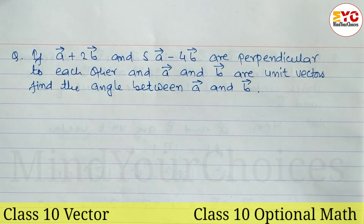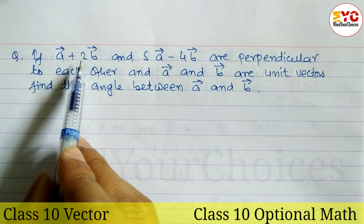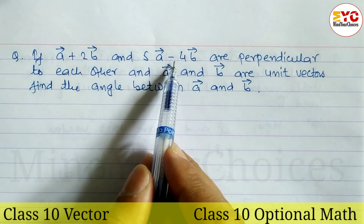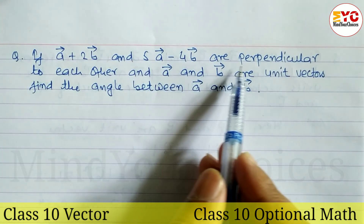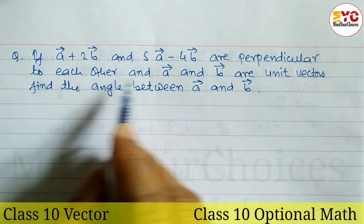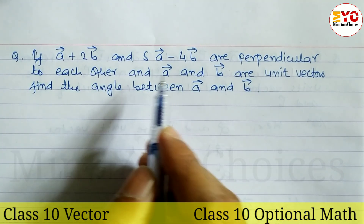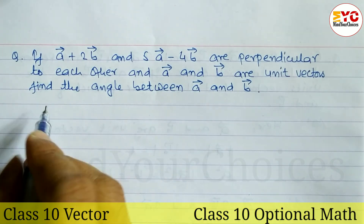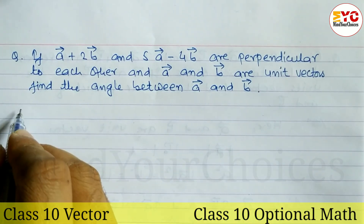In class 10, vectors are very important for the upcoming exam. If a vector plus 2b vector and 5a minus 4b are perpendicular to each other, and a and b are unit vectors, find the angle between them.